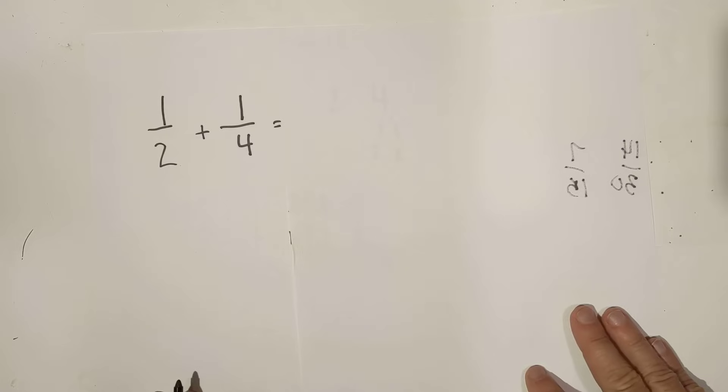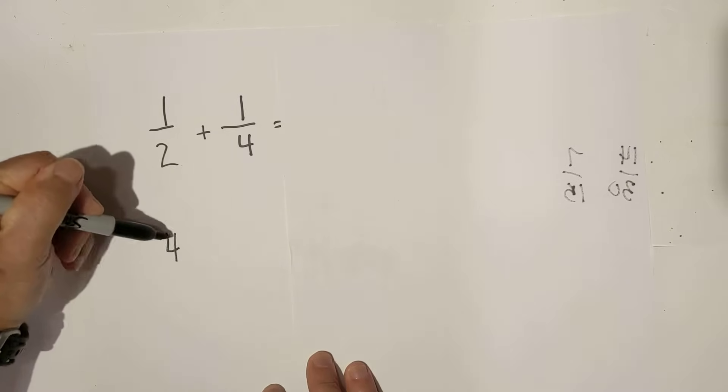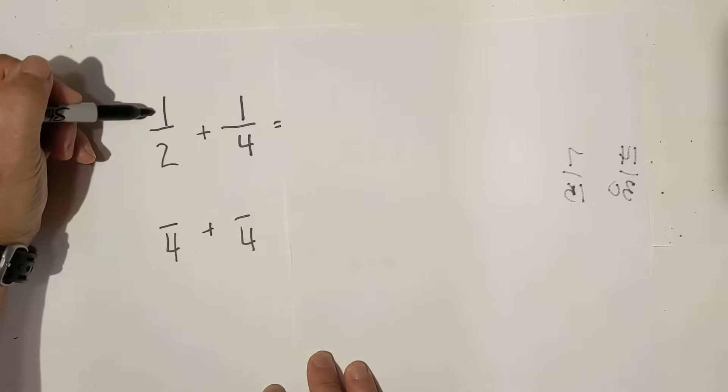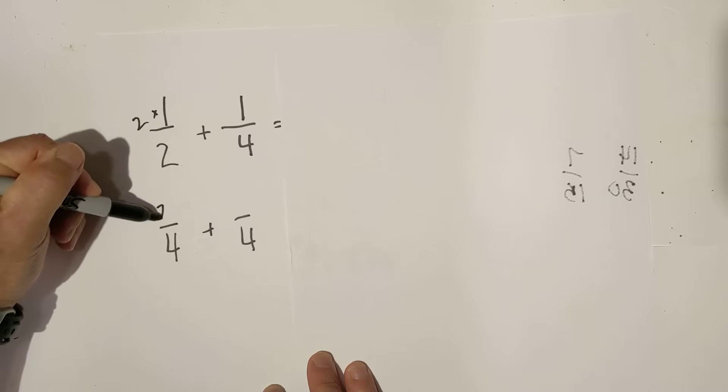I'm going to cover this up because it's a little distracting. So now the common denominator is four, two goes into four two times. So one times two is two.